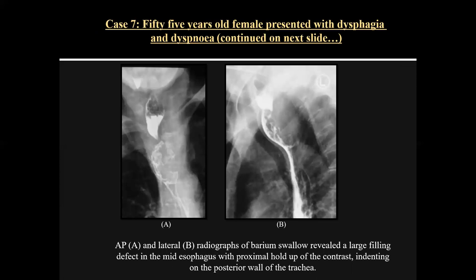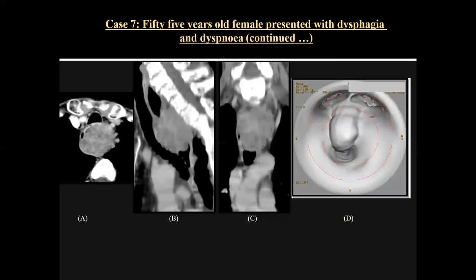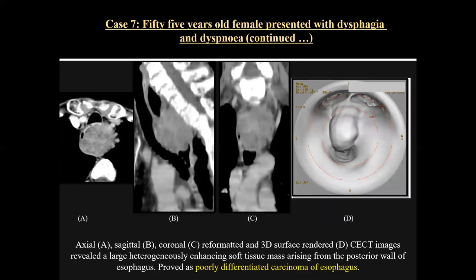Case seven was a 55-year-old female presenting with dysphagia and dyspnea. On barium study in PA and lateral film, there was a large filling defect in the mid-esophagus with proximal hold-up of contrast, suggesting a malignant etiology. On CT axial, sagittal, coronal, and 3D images, there was a large heterogeneously enhancing soft tissue mass arising from the posterior wall of the esophagus. This was confirmed as poorly differentiated carcinoma of the esophagus on FNAC.